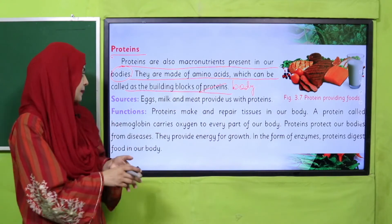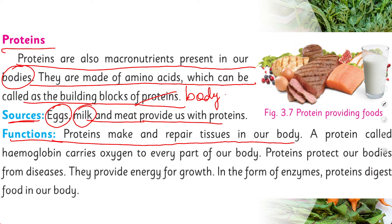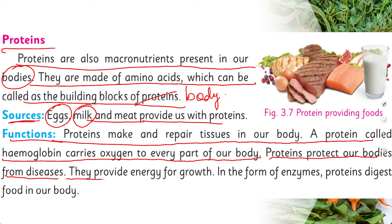Sources of proteins include eggs, milk, and meat. The functions of proteins are: they make and repair tissues in our body; a protein called hemoglobin carries oxygen to every part of our body; proteins protect our body from diseases; they provide energy for growth; and in the form of enzymes, proteins digest food in our body.